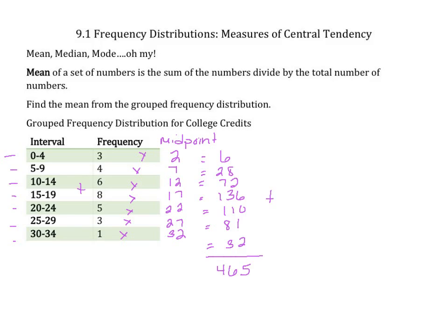We also need to add up all the frequencies — how often those happened — so that would be 30. Then to find the mean, we take 465 and divide it by 30, which gives us 15.5 as the average.